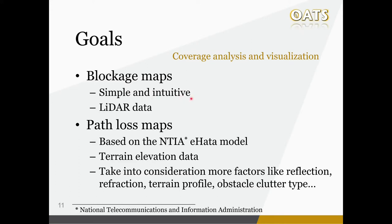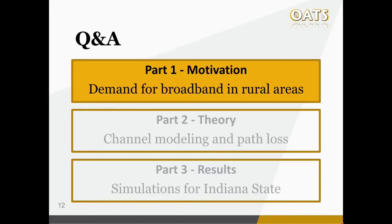The blockage map is a simple and intuitive way for people to locate blocked areas. It is generated mainly according to LiDAR data because LiDAR can record obstacles like trees and buildings. The path loss map considers, for each location of interest, the cell tower with the best connection condition and computes the path loss values accordingly. In our work, path loss values are computed according to the NTIA IHATA model, which is one of the standard go-to models from the regulator's point of view. The IHATA model takes signal reflection and refraction into consideration, and estimates the path loss according to terrain profile and obstacle clutter type. Any questions so far?